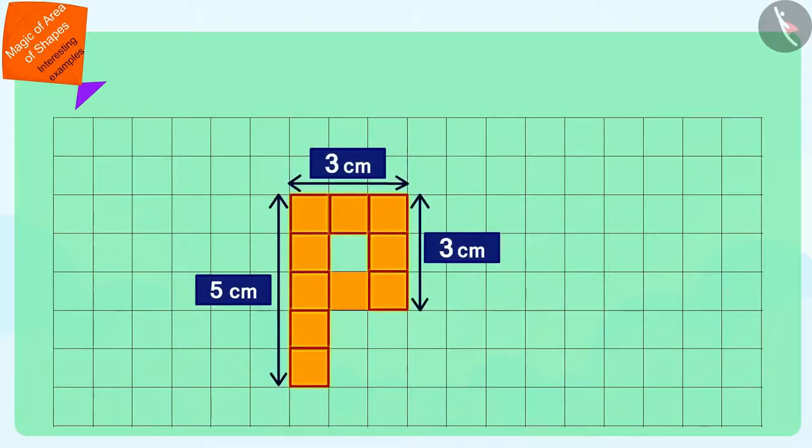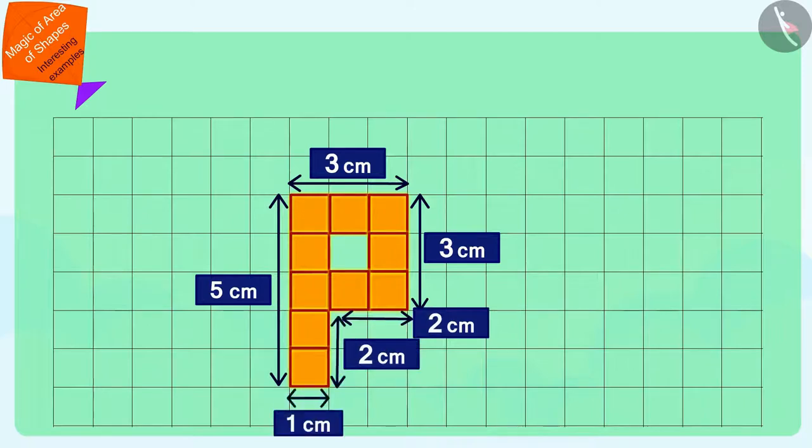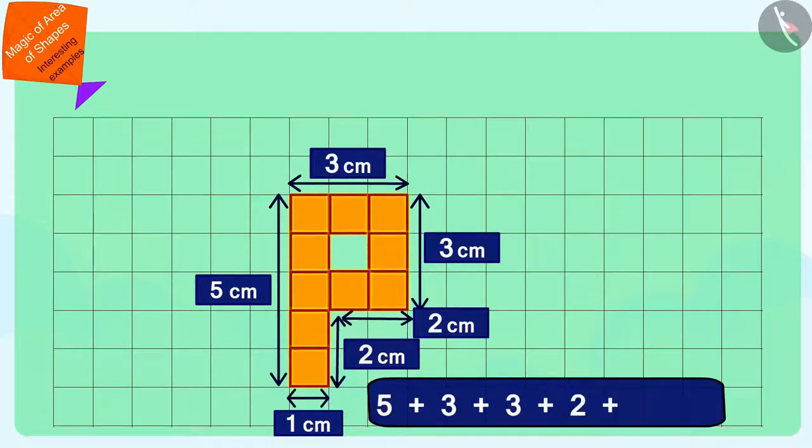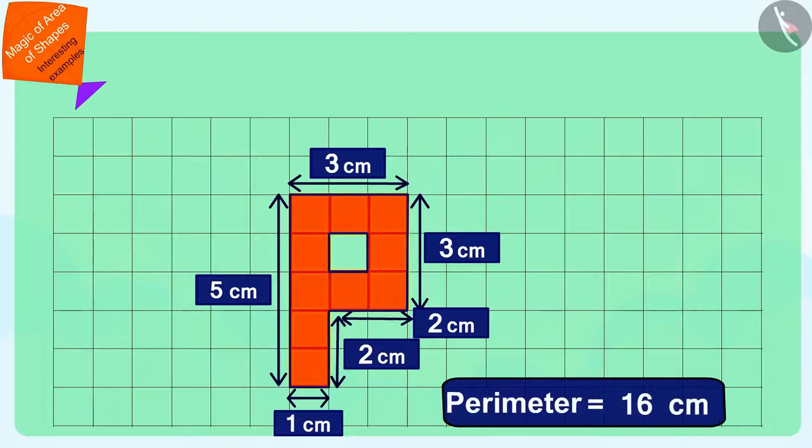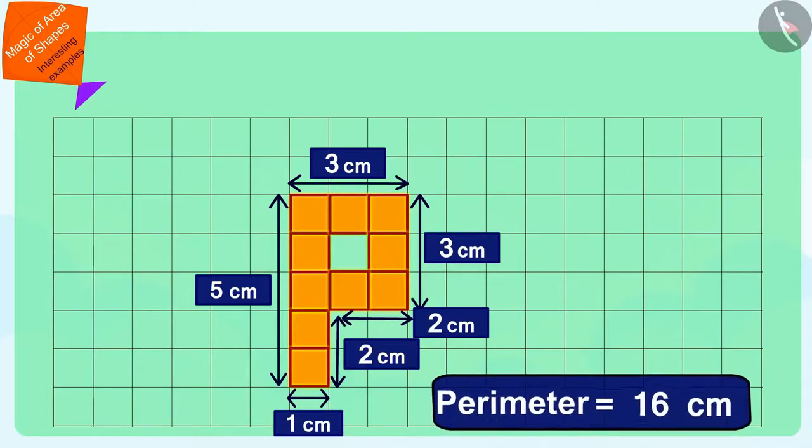we only need to find the number of squares that fall in its edges and add the measurements of all those edges. In this way, the perimeter of Pinky's letter P is 16 cm.